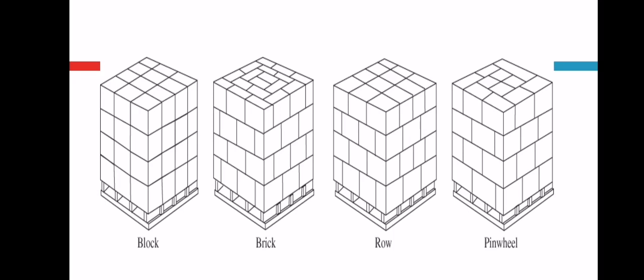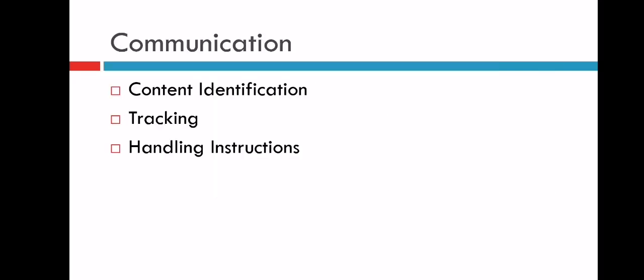Communication: what the packaging should communicate. It should communicate what content is there inside the package. We should be able to do tracking with proper barcodes. Handling instructions should be there, meaning how that product needs to be handled. Is the product sensitive to water? If so, an umbrella shape is shown which tells that this is sensitive to water. If it's fragile in nature, a glass is shown with a break symbol.